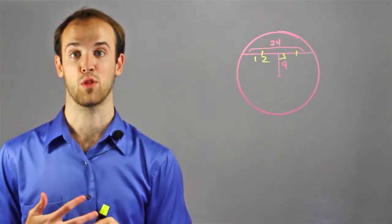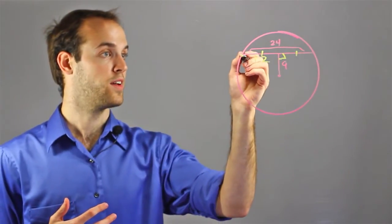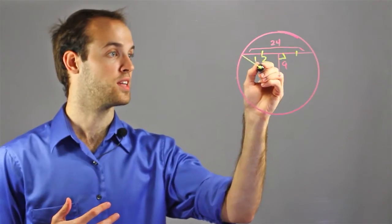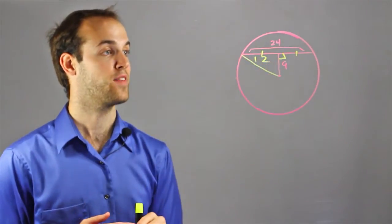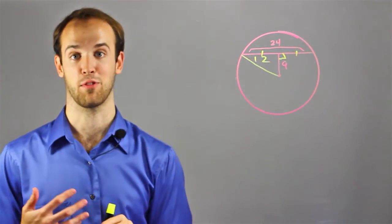And now, I want to know the radius of the circle. Well, if I draw the radius right here, for example, I have a right triangle, which I can use Pythagorean theorem to solve.